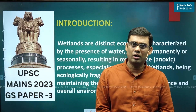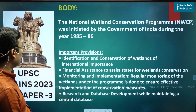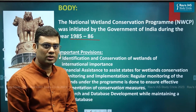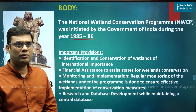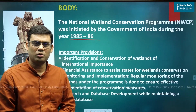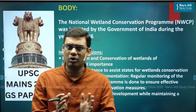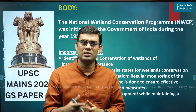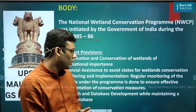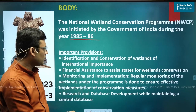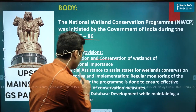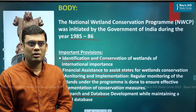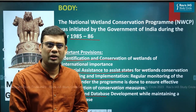Moving on to the second part of the answer — the National Wetland Conservation Program. The key points here: it was initiated in 1985-86. Its provisions are basic but important — the primary idea is to identify the most important wetlands. The overall provisions revolve around identifying important wetlands, taking steps to conserve them, creating a database, and monitoring. Specifically: identification and conservation, financial assistance to states, monitoring and implementation, and research and database creation.